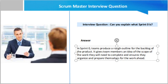A very common interview question for a Scrum Master is: what is Sprint Zero? In Sprint Zero, the team produces a rough outline for the product backlog. It gives team members an idea of the scope of work they will need to complete and ensures they organize and prepare themselves for the work ahead. Sprint Zero can be defined as a period when the agile team assesses the amount of work needed. Given its similarity to Scrum, some use the term synonymously and interchangeably.